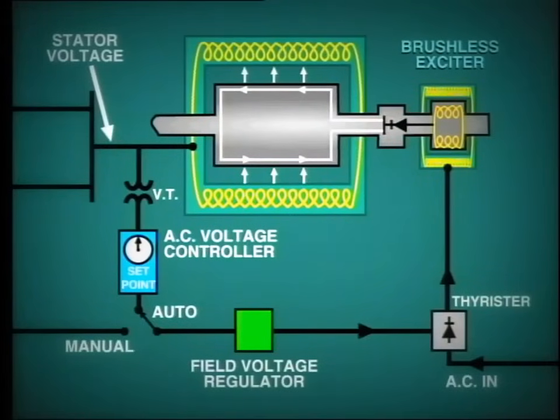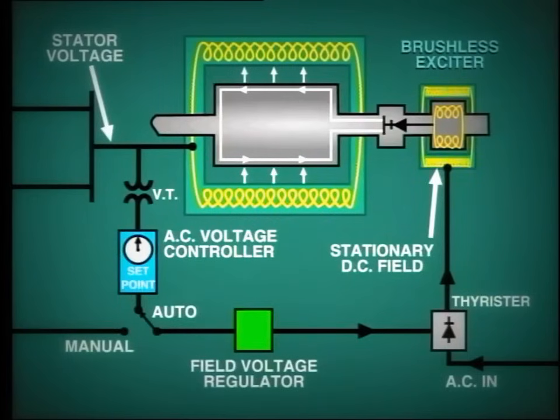In this exciter, a stationary magnetic field is provided from the DC winding, which is wound on the stator. The rotor winding produces AC voltage and this is fed directly into diode type rectifiers, which are built into the shaft. So we have in effect a rotating rectifier.